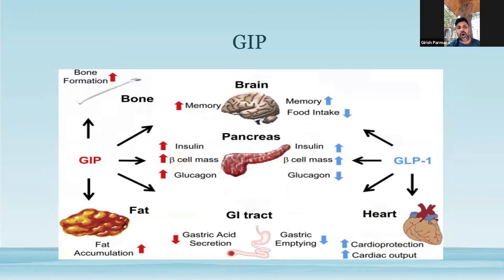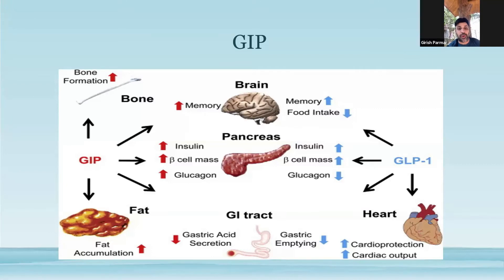At the level of the pancreas, at the level of the beta cells, GIP enhances insulin secretion which improves glucose control. At the level of the alpha cells, unlike GLP-1, GIP basically causes an increase in glucagon levels, which is probably not that great. At the level of the brain as well as the heart, the effect of GIP is almost similar to that of GLP-1 — it offers neuroprotection and cardioprotection. However, in addition, GIP has the added advantage that at the level of the bone, it offers osteoprotection — it promotes bone formation and prevents bone resorption, which is one of the advantages of GIP agonism.